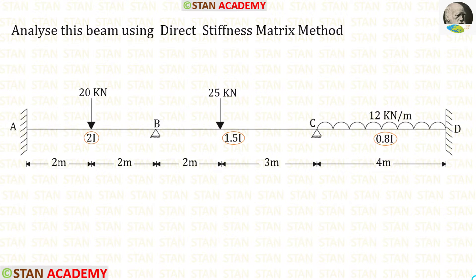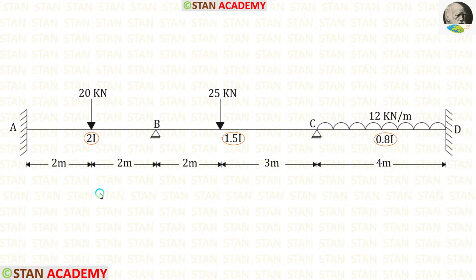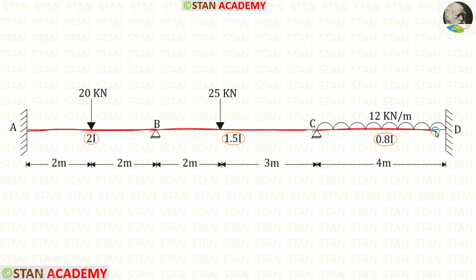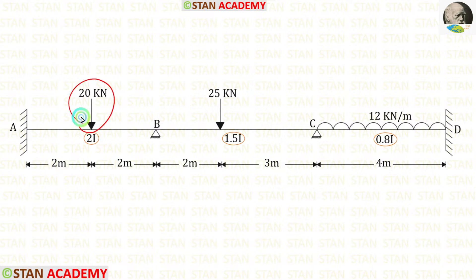Before analyzing, let us see the beam. In this beam, there are three spans: span AB, span BC, and span CD. In span AB, we have a point load of 20 kilo Newton acting at the center.